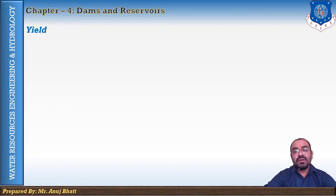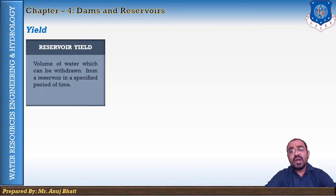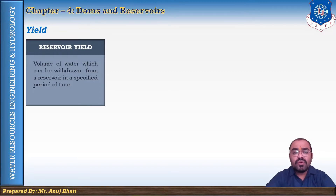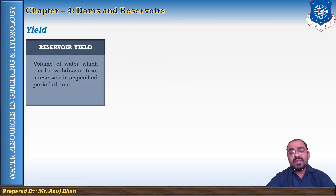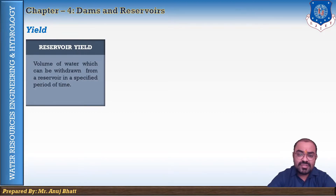The reservoir yield is the volume of water which can be withdrawn from the reservoir in a specified period of time. The amount of water that can be drawn from a reservoir in any specified time interval is the reservoir yield. It depends upon the inflow into the reservoir and the reservoir losses. The time period for estimation of yield is selected according to the size of the reservoir, and may vary from a day for a small distribution reservoir to a year for a large storage reservoir.